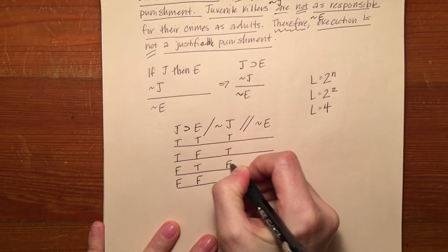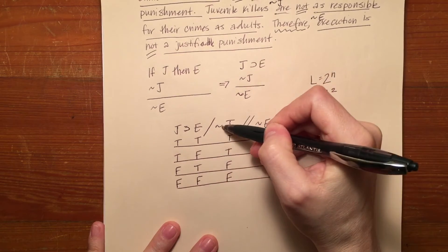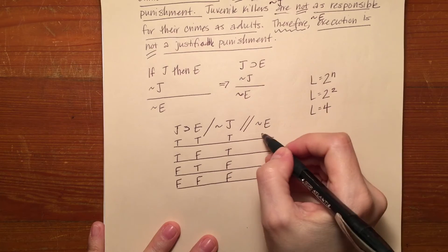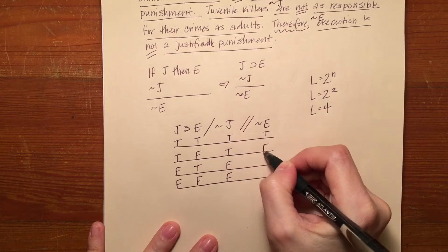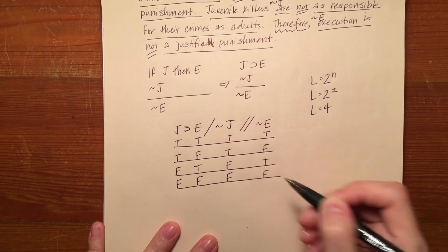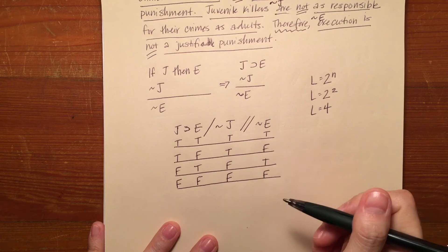So true, true, false, false under the J, taking care not to write it under the operators. And again true, false, true, false under the second time that I see the E. Now everything is set up and it should look very familiar to you.